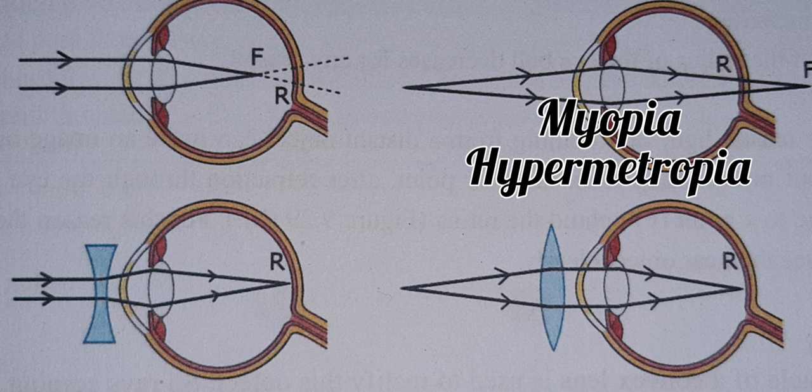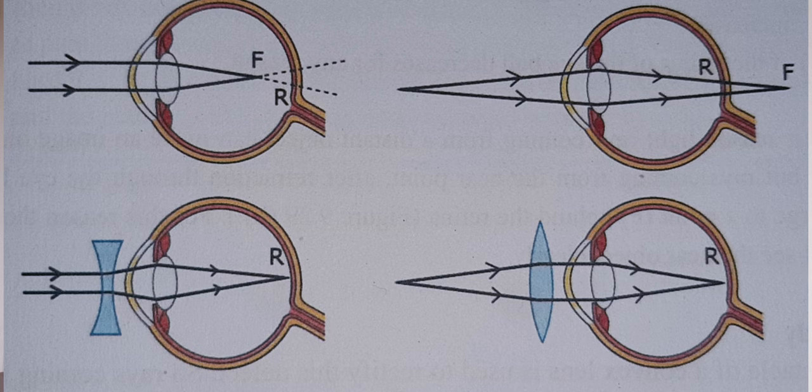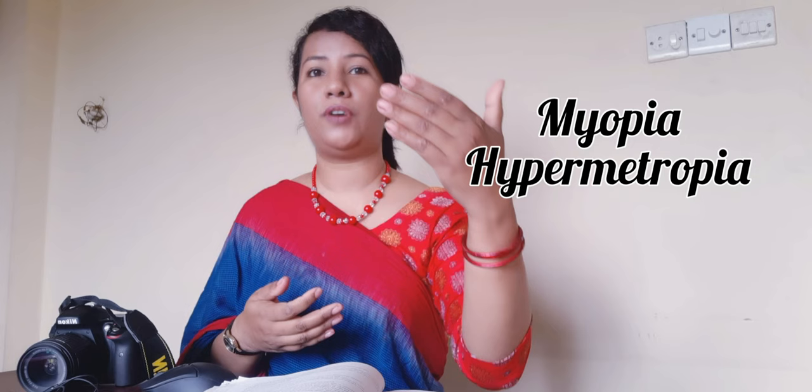There are two types of vision problems. Number one is myopia — that is nearsightedness. Number two is hypermetropia — that is farsightedness. With nearsightedness, if something is close you cannot see it properly. And if something is far and you cannot see properly, that is farsightedness — that is hypermetropia. So two types of problem.